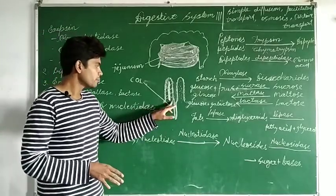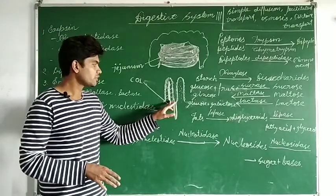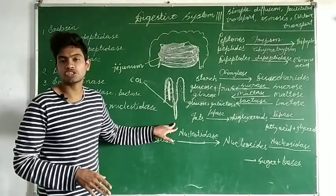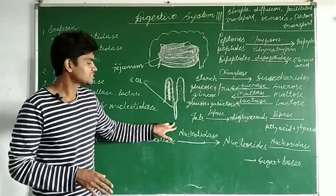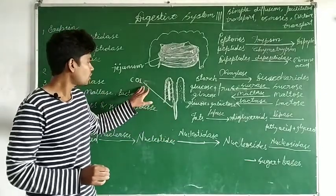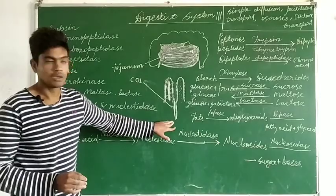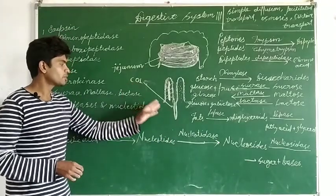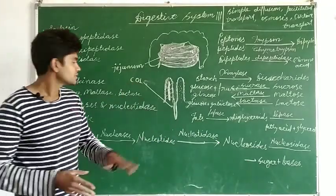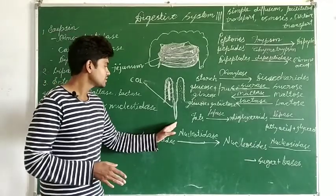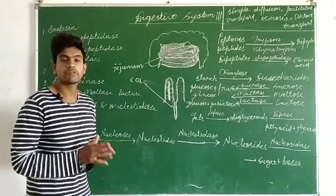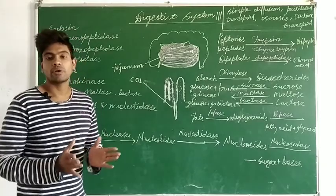Between the bases of these two villi there are glands which are called intestinal glands or crypts of Lieberkühn. These crypts of Lieberkühn or intestinal glands secrete some secretions. We will now see what those secretions are one by one.